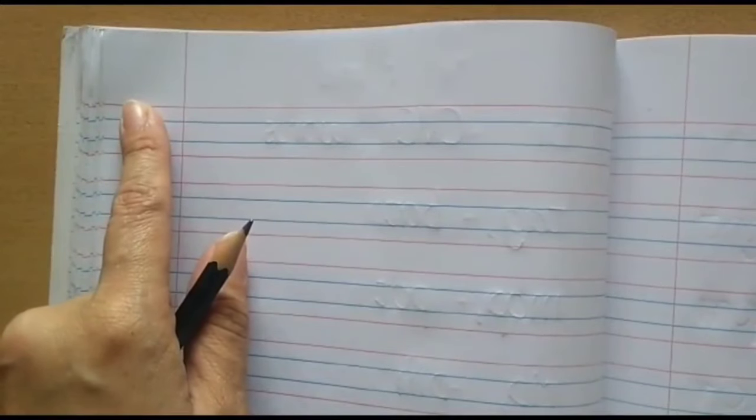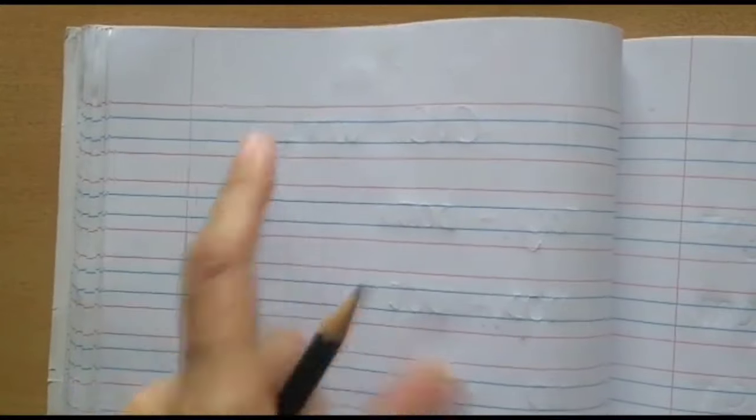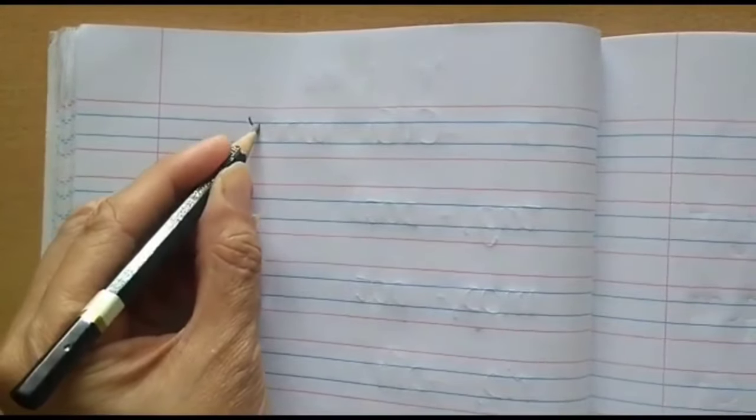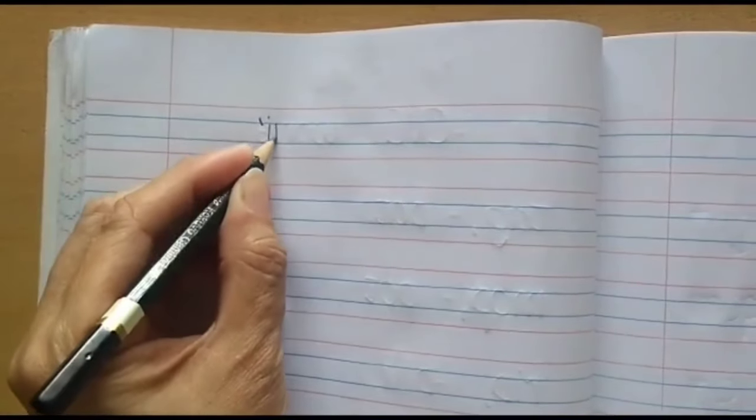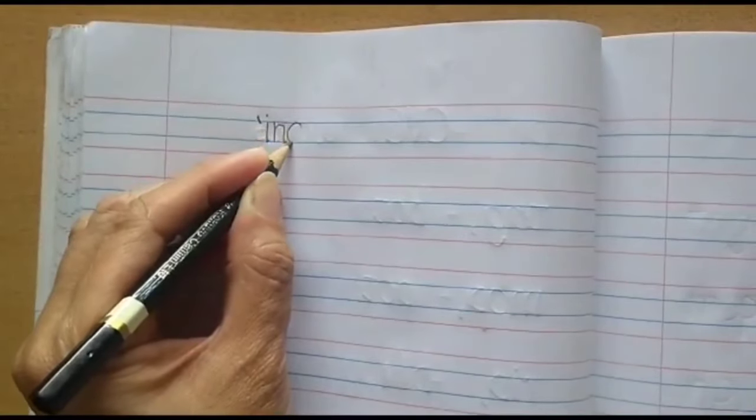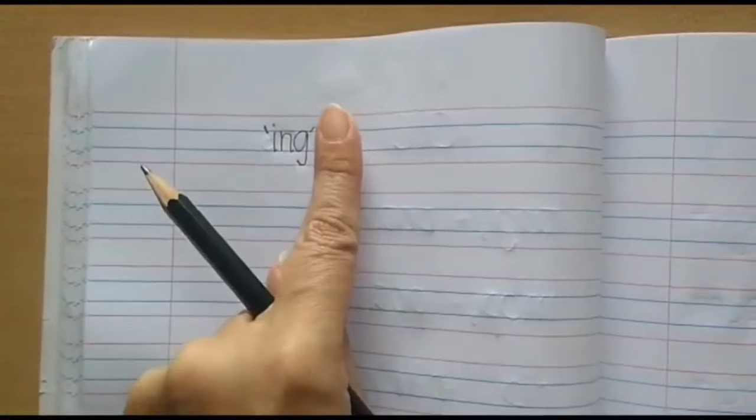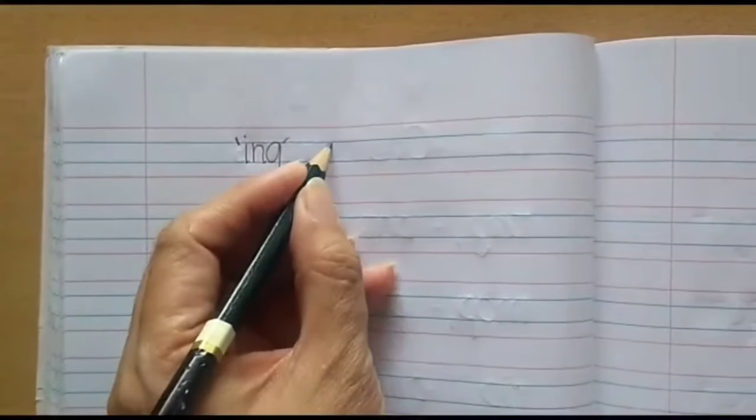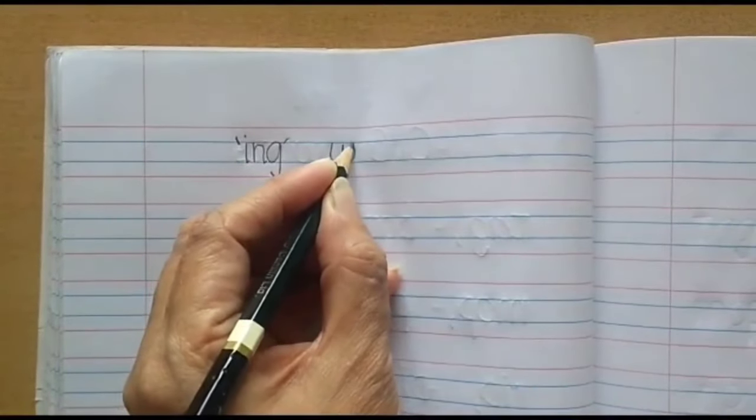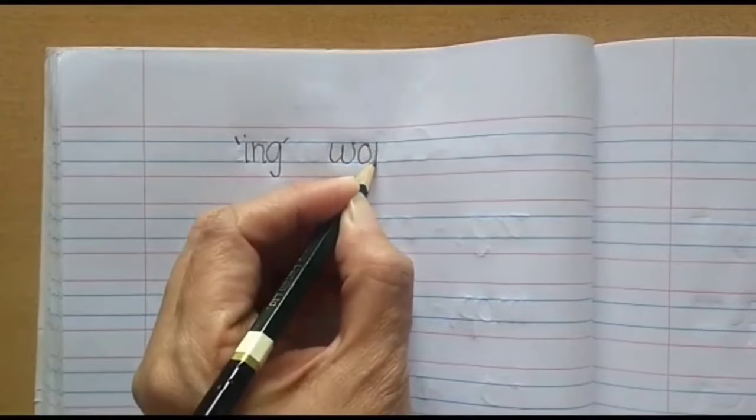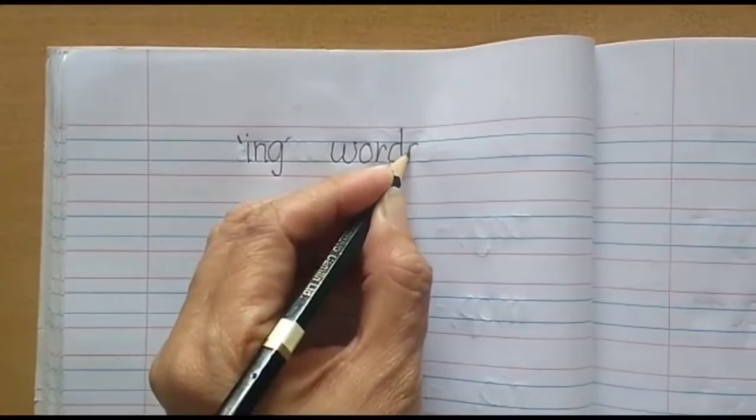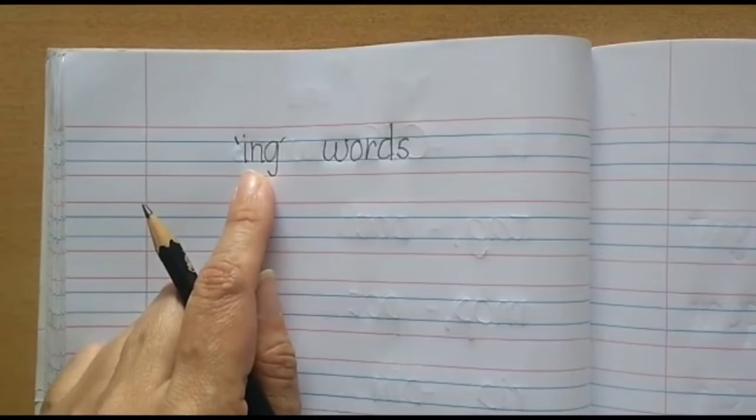First, on the top left corner, we will write today's date. Then, on the first line, we will write a small slanting line on the first blue line. Then write I, N, G. Then another slanting line. Then, you have to keep your index finger. And after that, you will write W, O, R, D, S. So, here we have written ing words.